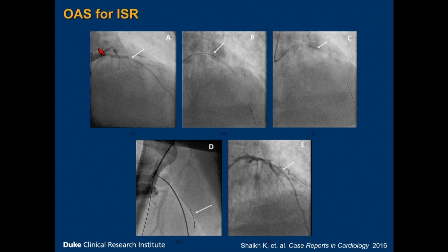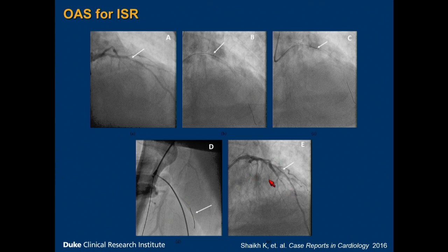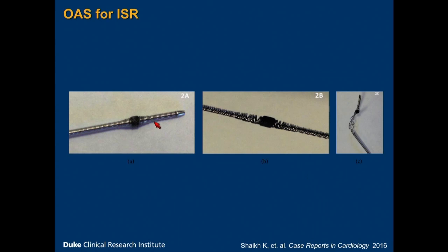I want to emphasize this point about in-stent restenosis. This is a case report where they used the orbital atherectomy crown for in-stent restenosis. In panel A, you can see a significant in-stent lesion. They wired it with a viper wire and placed the crown of the OAS device proximal to the in-stent restenosis lesion, then tried to advance it — but had significant deceleration to the point where the crown stopped and the device turned off. They also ended up breaking off the tip of the wire, which lodged in the femoral artery. When they pulled the device out, this is what the normal crown looks like — a braided device with a diamond-encrusted crown. This is what happened when it got caught inside the stent: the entire thing started coming apart, and when they pulled the device, they actually pulled part of the stent out with it. So this is something that will certainly tighten your sphincter — I would recommend that you not do this.